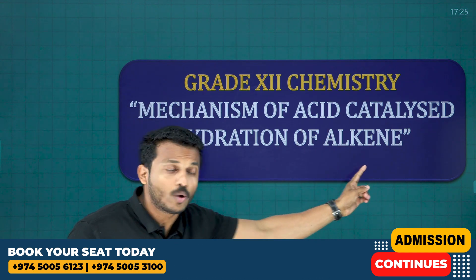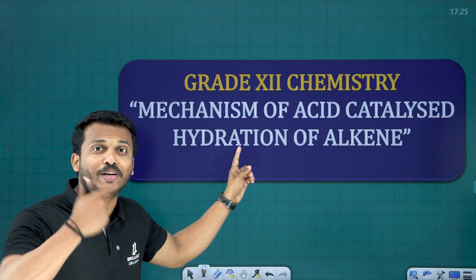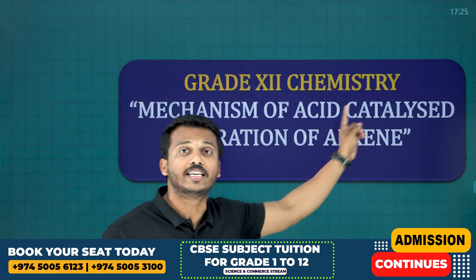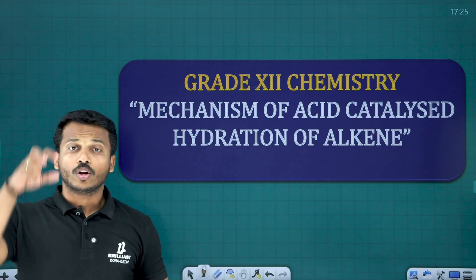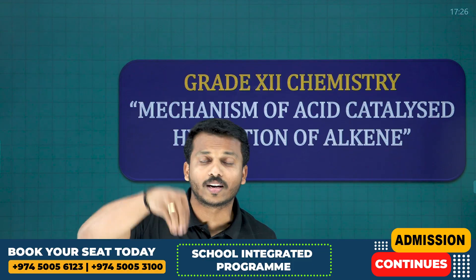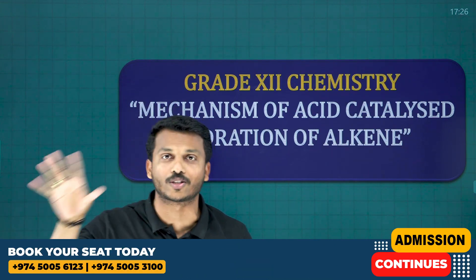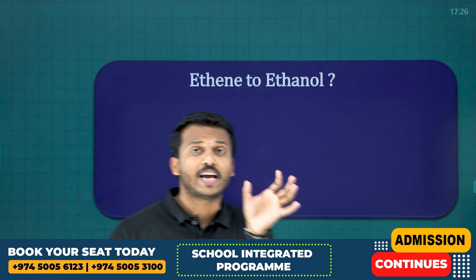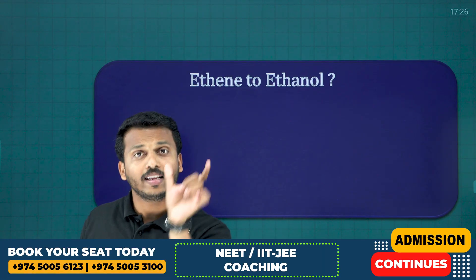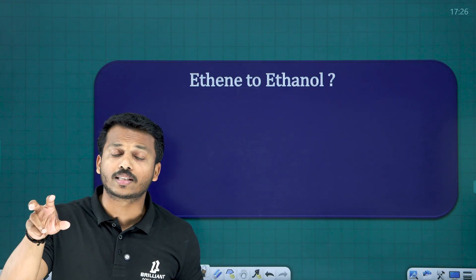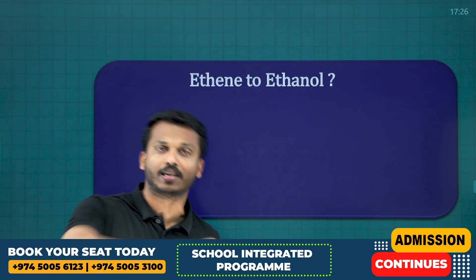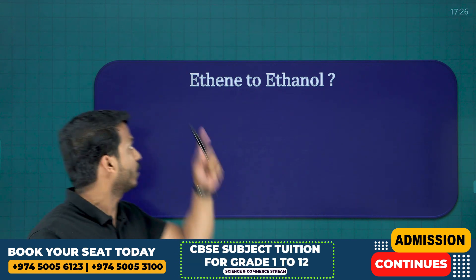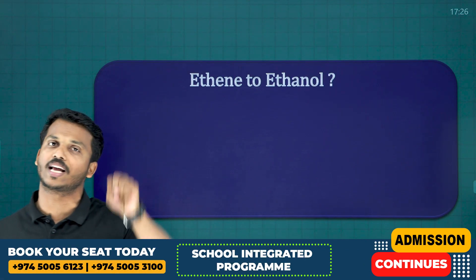What does hydration actually mean? To an alkene, we are adding water. So to an alkene, we are adding water in the presence of an acid — that is the process. For exam, either they ask you to write the mechanism for acid catalyzed hydration of alkene, or they ask you to write the mechanism for the conversion of ethene to ethanol. This is the basic question asked in the exam.